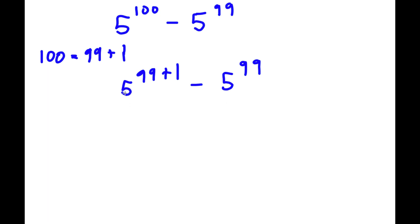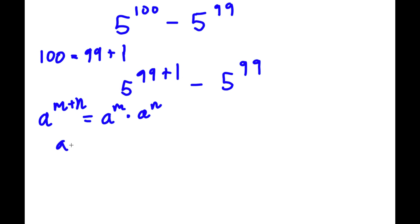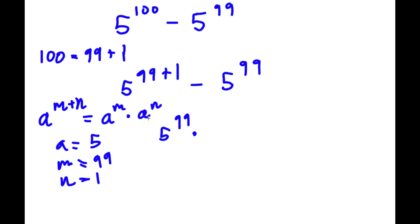An important property of exponents is that if you have something in the form a to the power of m plus n, this is equal to a to the power of m times a to the power of n. So in this case, we have 5 to the power of 99 plus 1, where a is 5, m is 99, and n is 1. So we rewrite 5 to the power of 99 plus 1 as 5 to the power of 99 times 5 to the power of 1.